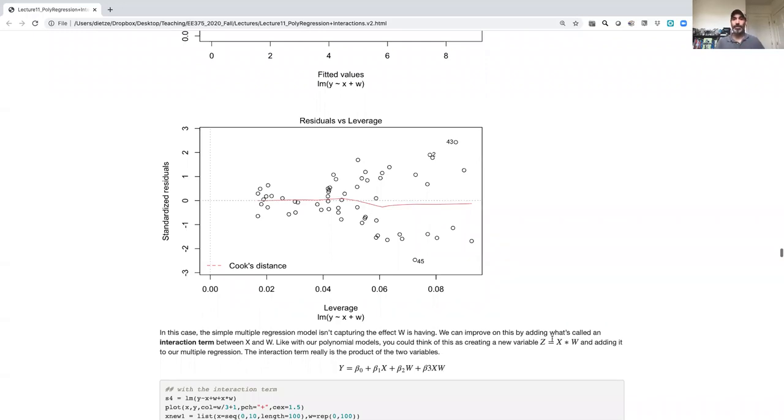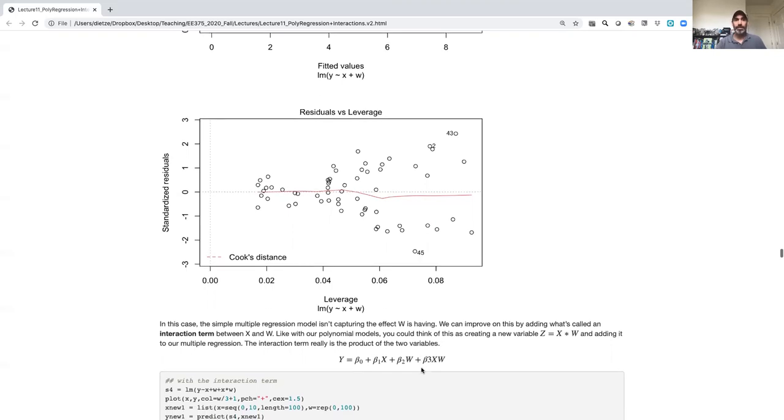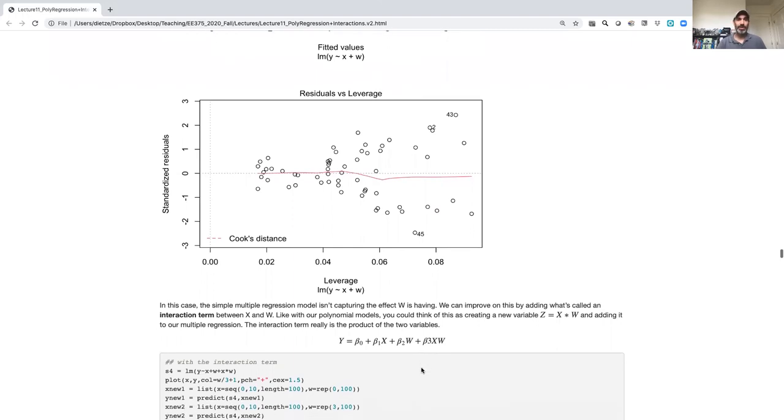By analogy to what we did with a polynomial, we could imagine recoding this as some new variable z that is x times w. And I'm putting that in, and that's what an interaction term is. It literally represents the multiplication of two of our variables together, and essentially treating it as if it were a new column. Similar to how with a polynomial, we raise one of our variables to a power and treat it as a new column.